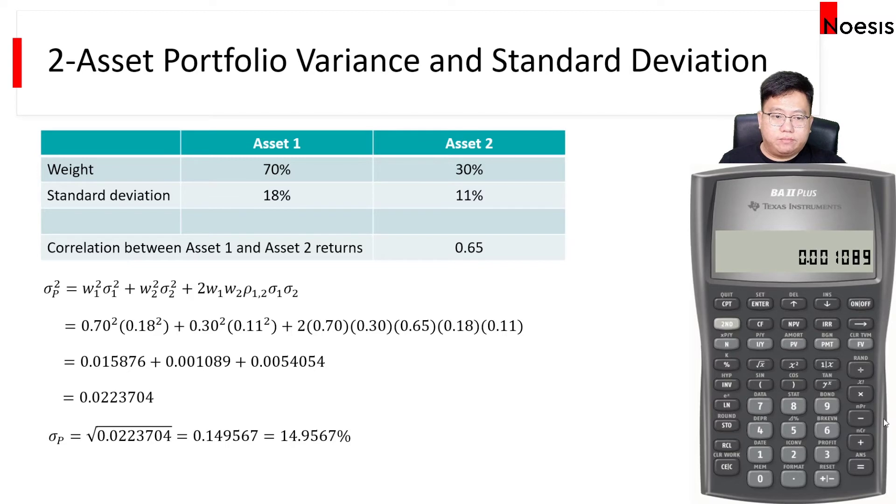And then the last term, I'll take 2 times 0.7 times 0.3 times 0.65 times 0.18 times 0.11. So when we take the correlation times the standard deviation of asset 1 and 2, that gives us the covariance between asset 1 and 2. So that gives us 0.0054054, and then I'll save this into button 3. I'll press store 3.